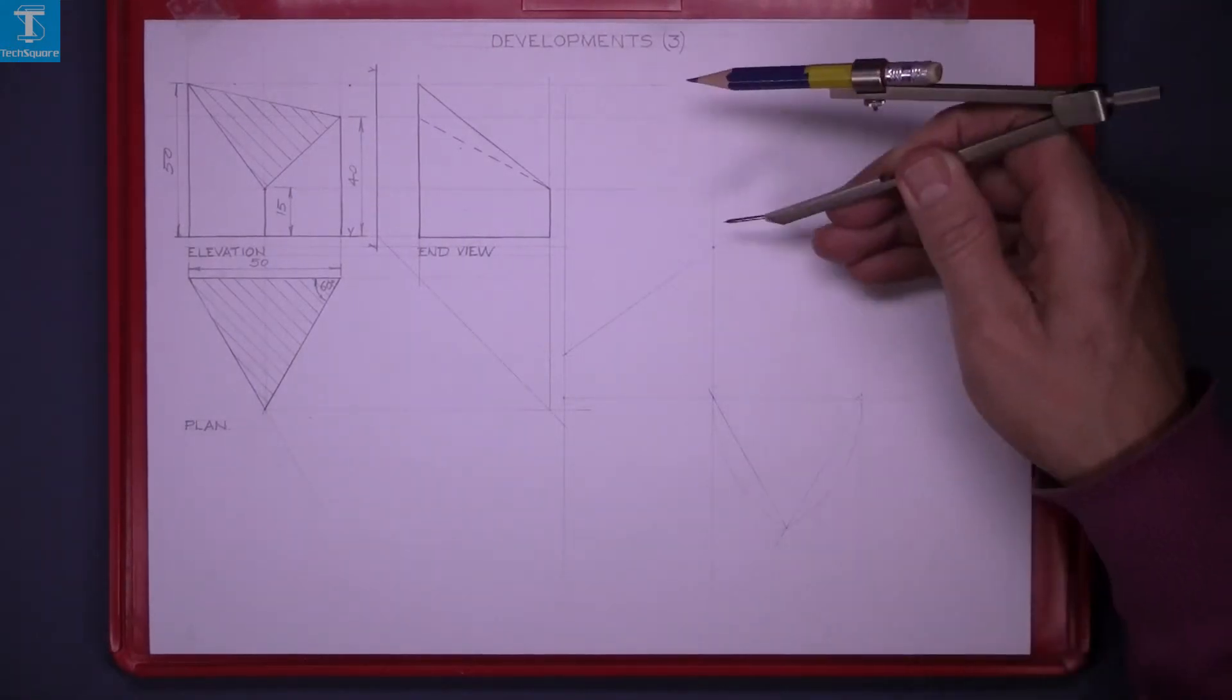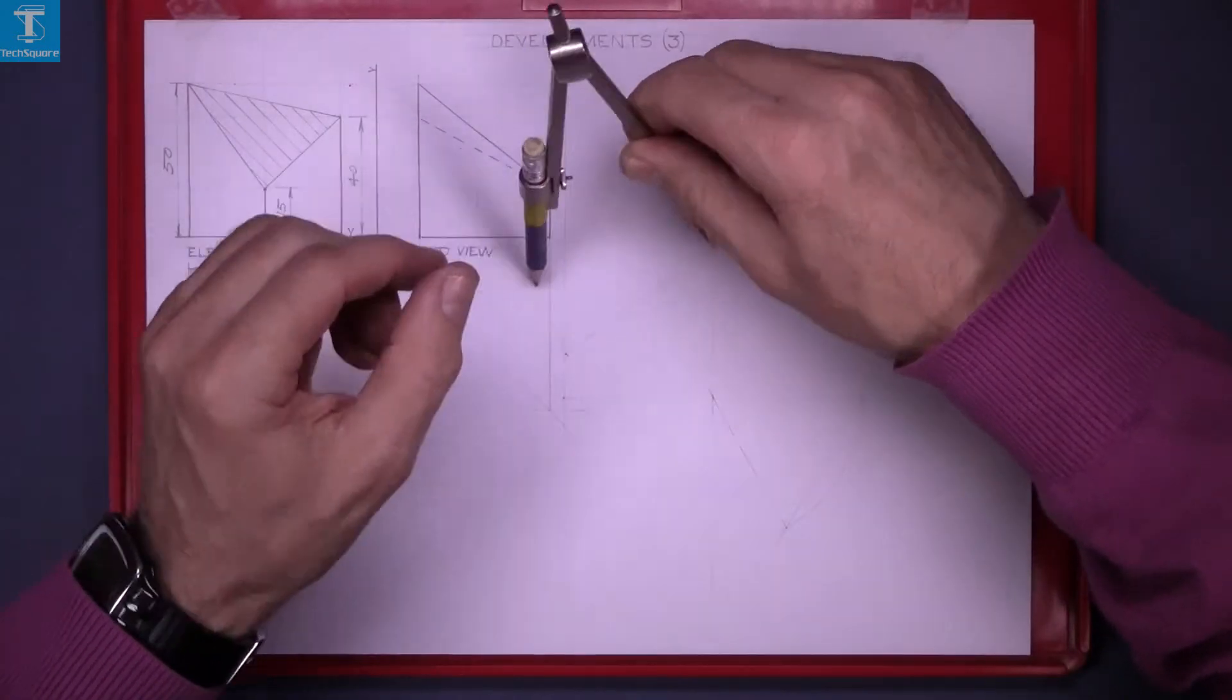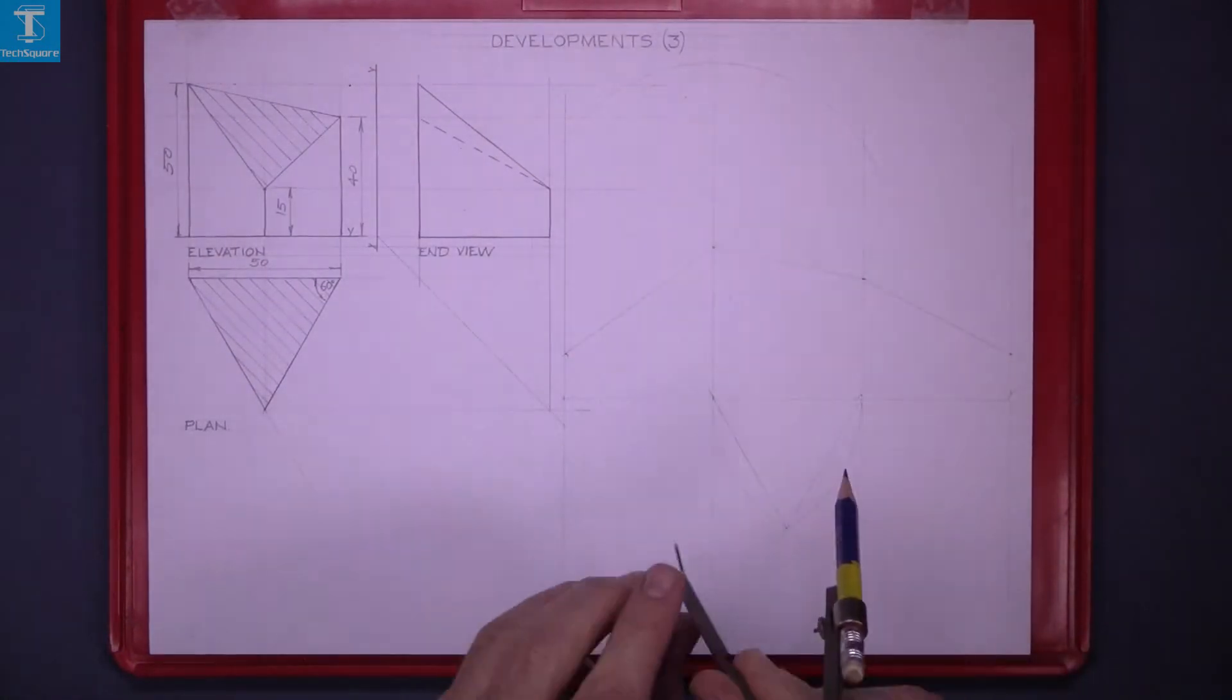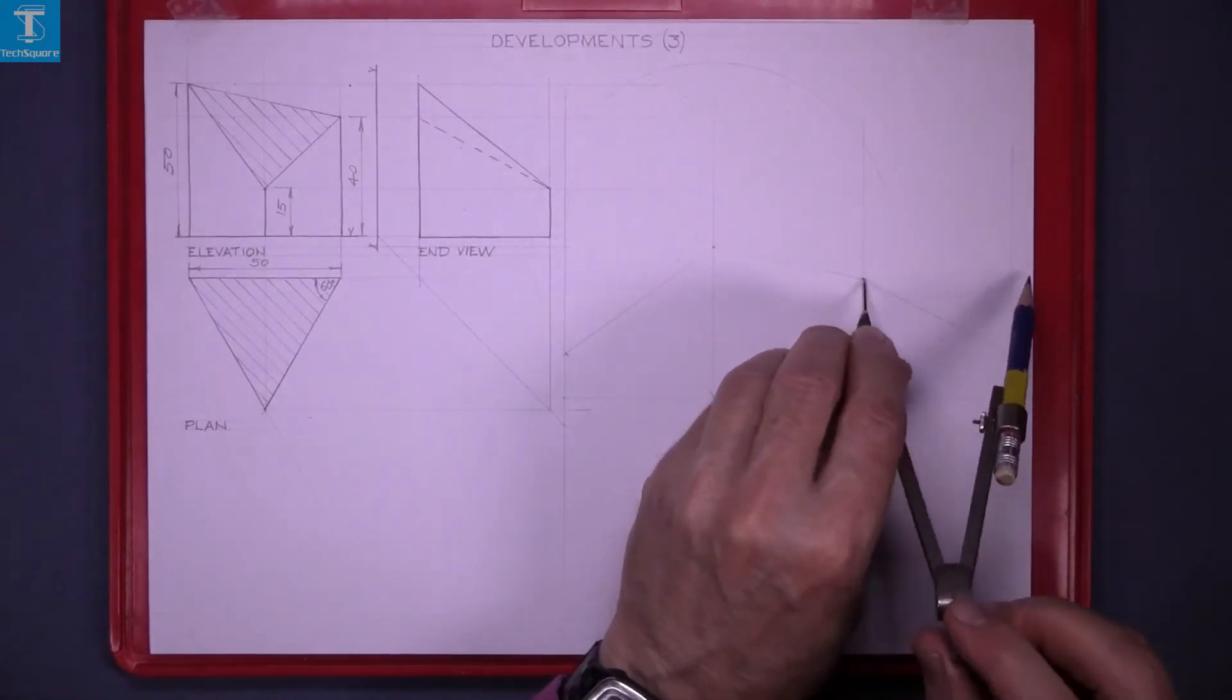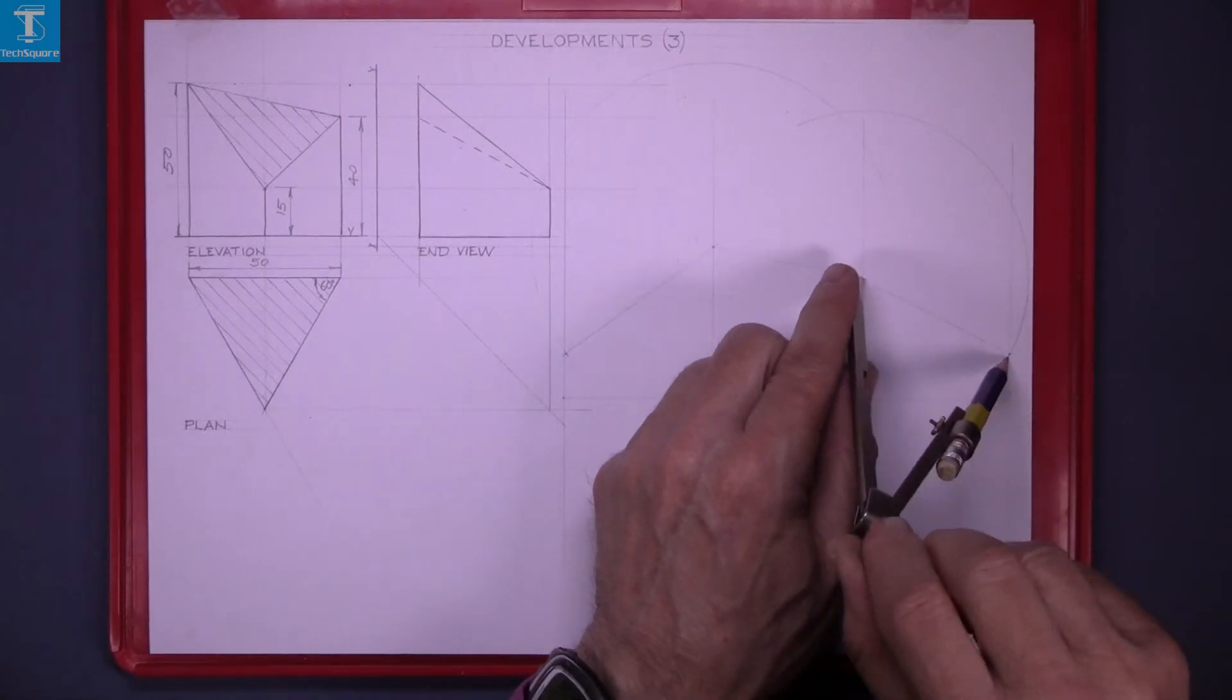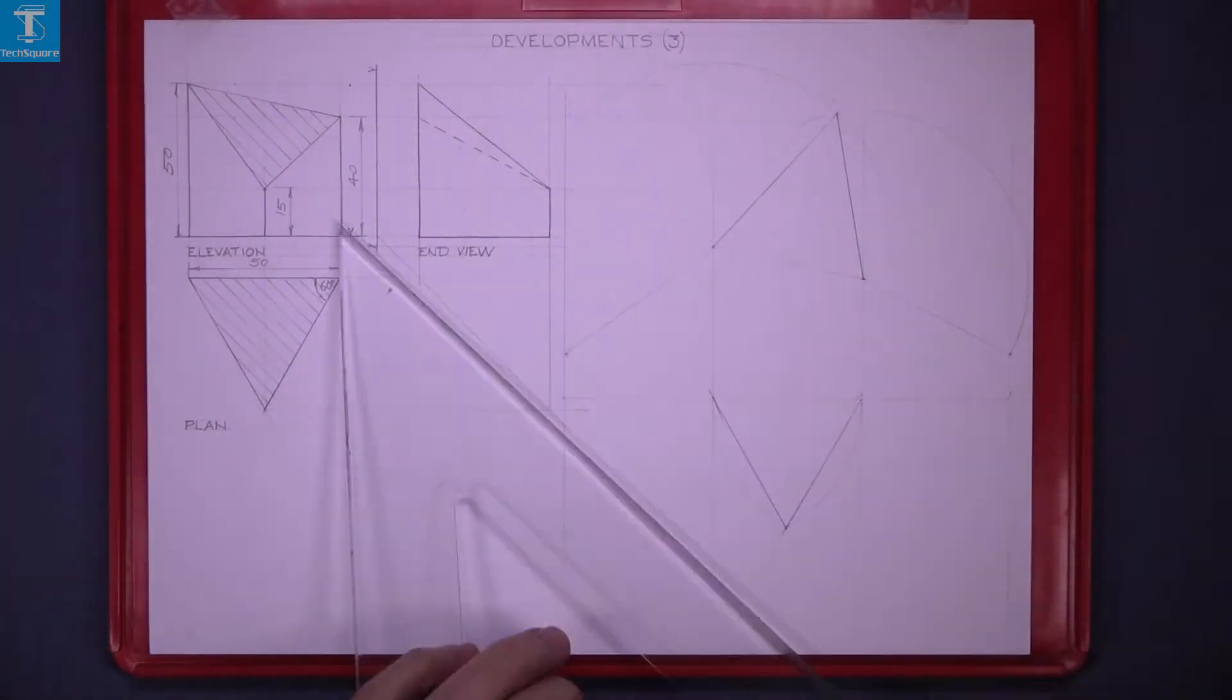To get the true shape of the top of it set the compass to the length of the left hand line here. Draw an arc, now set it to the right hand line. Draw an arc and join that up and line in your development.